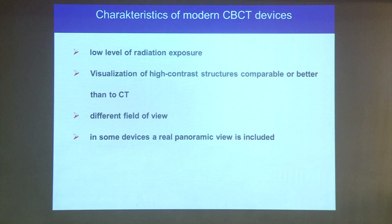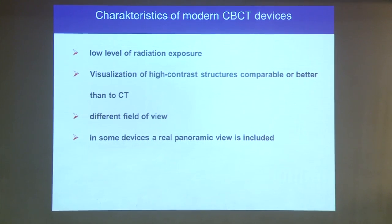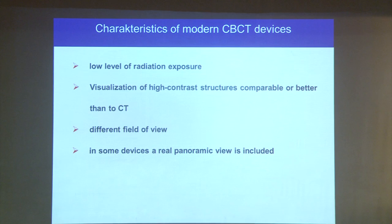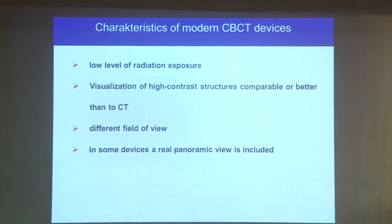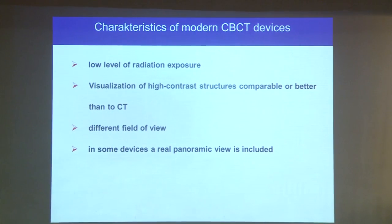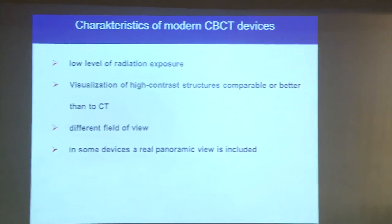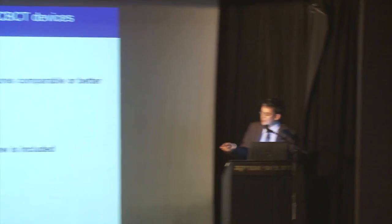What are the characteristics of cone beam devices today? First of all, and this was shown by Jonathan also, we have a very low level of radiation exposure — and this is very important in our field, because we have patients pre-operatively, post-operatively, during follow-up, we have kids for orthodontic treatment who need repeated imaging. So this is really a point to consider when we send patients for imaging. Of course, we can visualize high contrast structures — teeth and bone — which is exactly our topic.